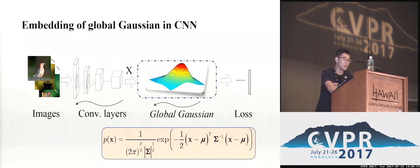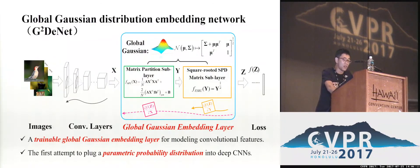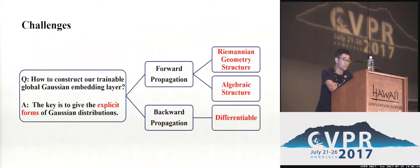So one natural idea is: can we model the output of the last convolutional layer with a global Gaussian distribution and embed it into a deep CNN architecture in an end-to-end manner? Here, X is the 2D feature map, and mu and sigma are the mean and covariance matrix of the feature map. To this end, we propose a trainable global Gaussian embedding layer for modeling convolutional features with a global Gaussian representation. The resulting network we call the Global Gaussian Distribution Embedding Network. To our best knowledge, it is the first attempt to plug a parametric probability distribution into a deep CNN in an end-to-end manner. The primary question is how can we construct our global Gaussian embedding layer?